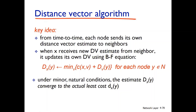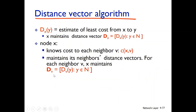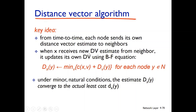From time to time, each node sends its own distance vector estimate to its neighbors. When node x receives a new distance vector estimate from its neighbor, it updates its own distance vector using the Bellman-Ford equation: dxy = min over v of (cxv plus dvy).